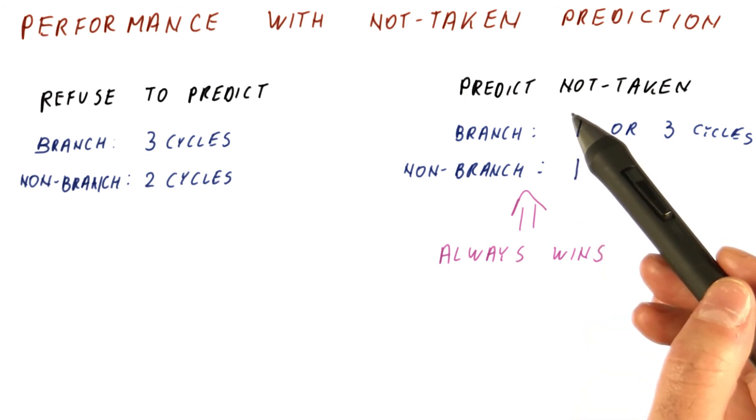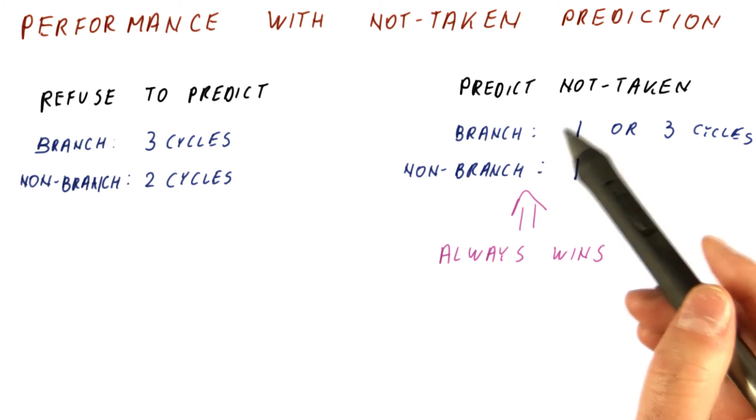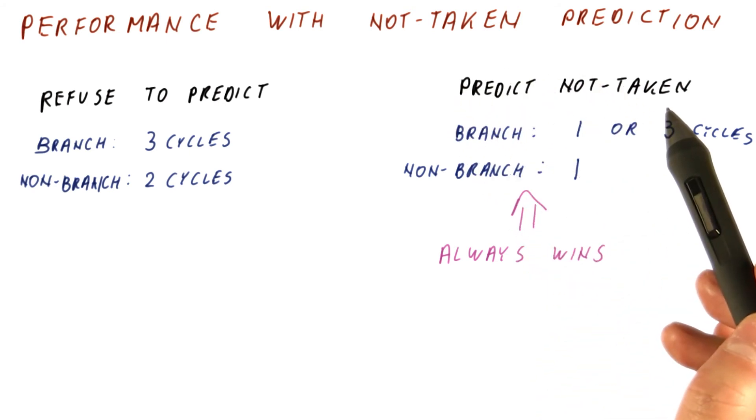This is why every processor that has a pipeline will do some branch prediction, even if the prediction it is doing is simply increment the PC and fetch the next instruction.